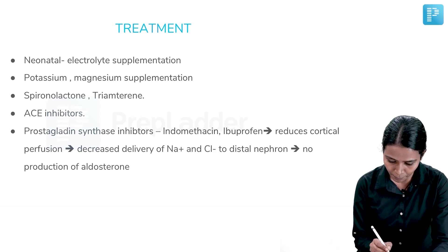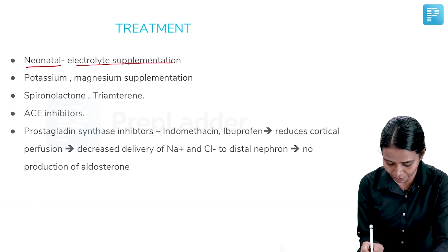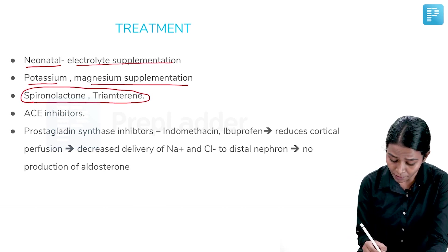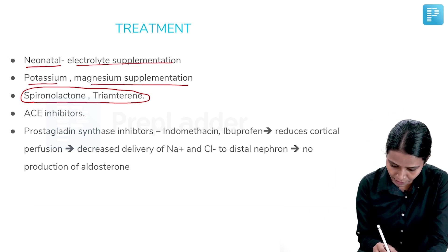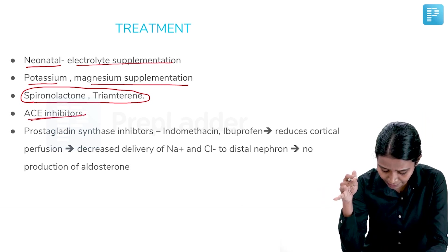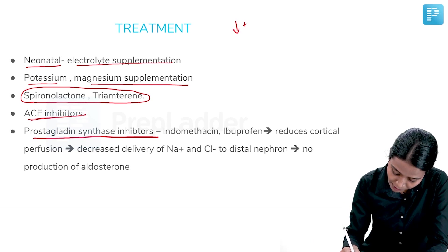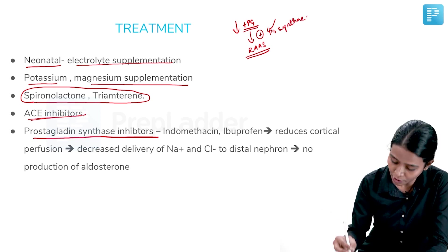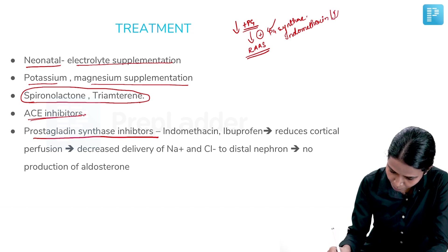Treatment: For neonatal Bartter, electrolyte supplementation (sodium and potassium) is the best initial treatment, along with potassium and magnesium supplementation. Spironolactone and triamterene can block the mineralocorticoid receptor and ENaC channel to counteract hyperaldosteronism. ACE inhibitors can also be tried. However, the most effective treatment is prostaglandin synthase inhibitors — specifically COX inhibitors like indomethacin or ibuprofen.